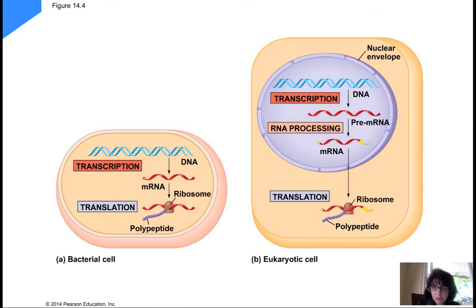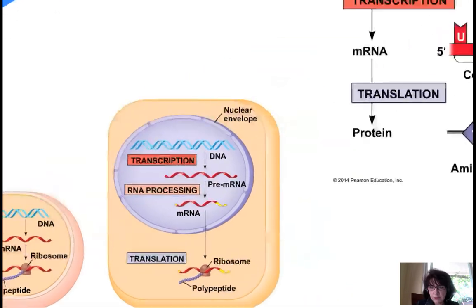It's very important that DNA gets transcribed into pre-mRNA, which is a larger piece of nucleic acid. The U gets added in instead of the T that was in the DNA. And then the RNA will get processed.